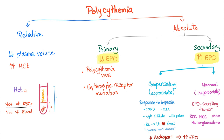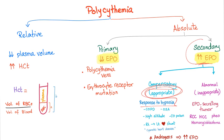Let's review polycythemia. It can be relative or absolute. Absolute can be primary, such as polycythemia vera, or secondary — which we're talking about in the case of hypoxia. This could be a compensatory, appropriate increase in EPO in response to hypoxia, such as high altitude or acute mountain sickness.